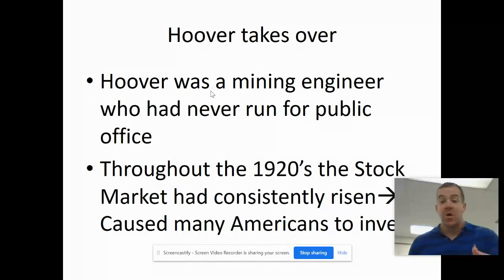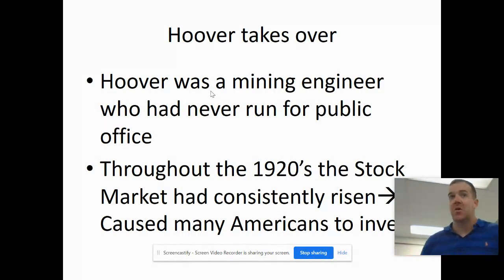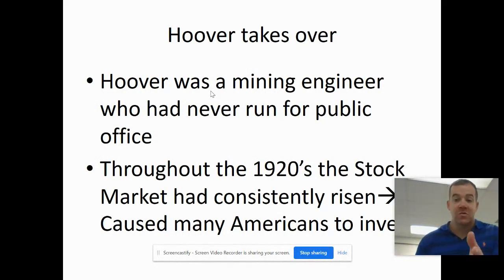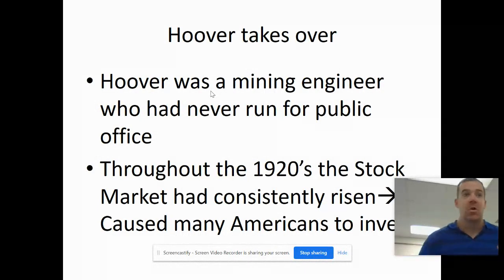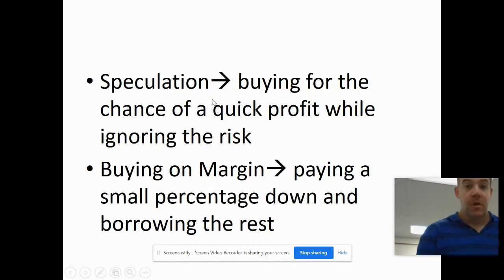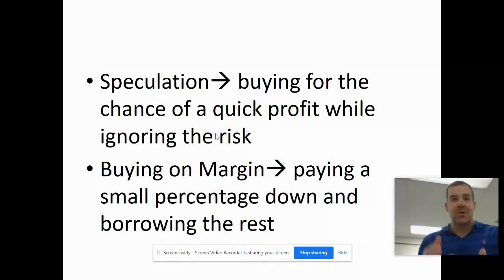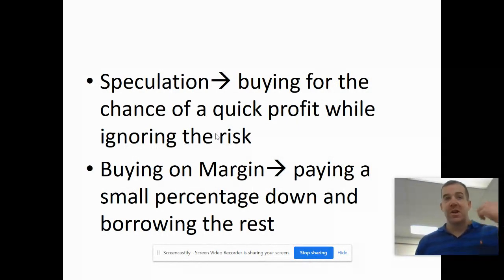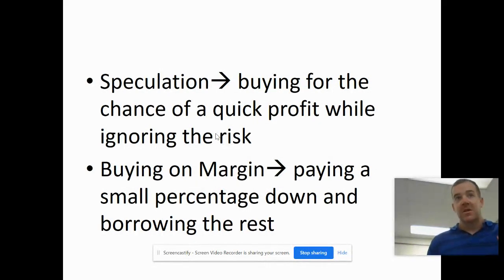The stock market had consistently risen in the 1920s, so a lot of Americans saw the market going up and were emptying out their savings to buy stocks, hoping to get rich. The country was going very well in the 1920s, but there were underlying problems. Speculation — the idea of putting all your money into something hoping it'll turn around and make a quick profit — buying something with the premise that in the future it's going to turn out well for you.